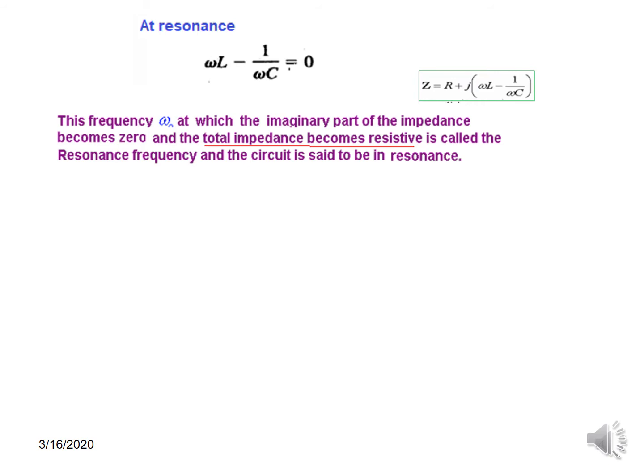When the imaginary part becomes zero, the impedance is nothing but resistive. At this point, the angular frequency is written as ω₀. The frequency ω₀ at which the imaginary part of the impedance becomes zero and the total impedance becomes purely resistive is called the resonance frequency, and the circuit at that moment is said to be in resonance.